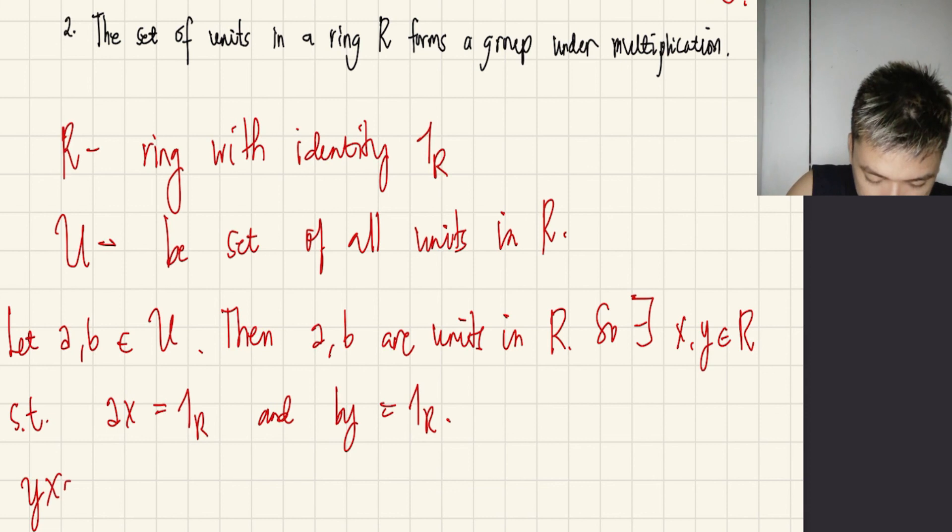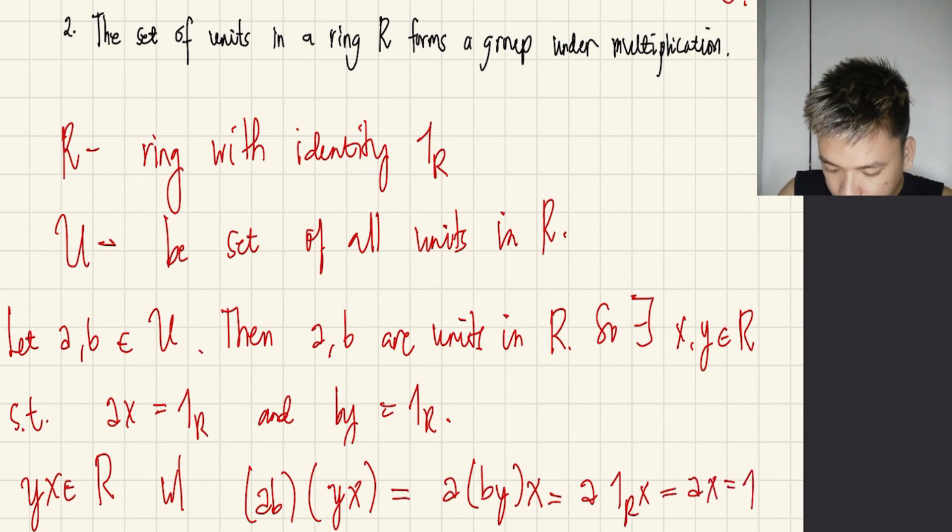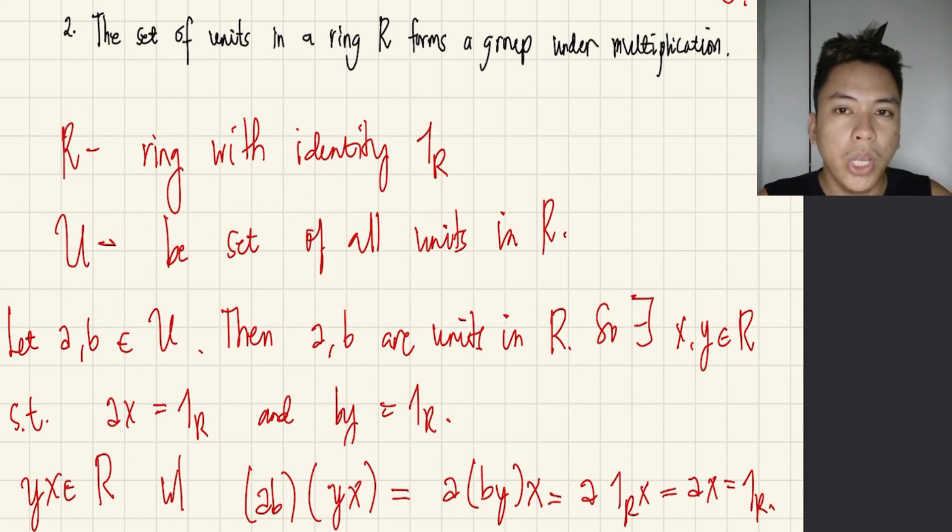Now remember, R is a ring here. Therefore, the product of Y and X is also an element of the ring R. So I'm going to multiply AB and YX because they're elements of R. And that's the same as ABYX, which equals A(1R)X, which equals AX, which equals 1R. Meaning this is closed under multiplication for U. Observe that those elements in U are coming from R, so since R is associative, U is also associative. Those identity elements and inverse elements from R are also present in U from the fact that U is defined to be the set of all units in R. Therefore, U forms a group under multiplication. That's it.